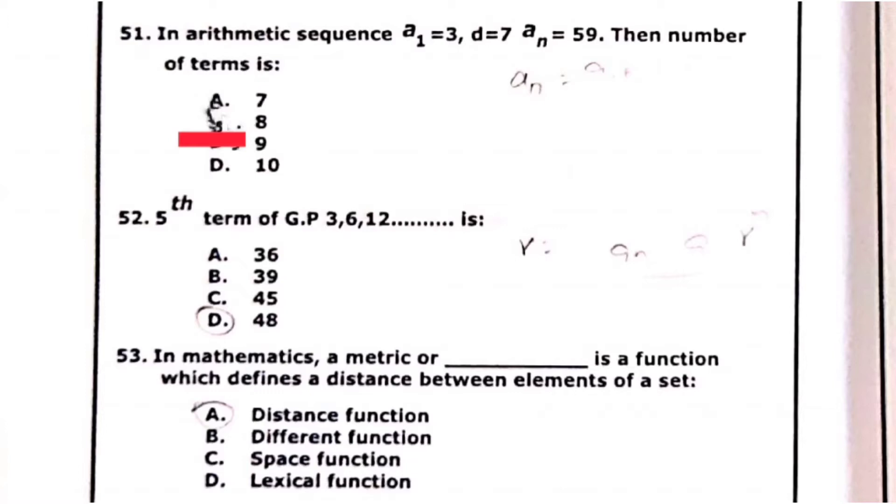The number of terms is when we solve this then we get the answer 9. Question 52: fifth term of the geometric progression, the answer is 48. In mathematics, a metric or distance function. Basically we call the metric function as a distance function.